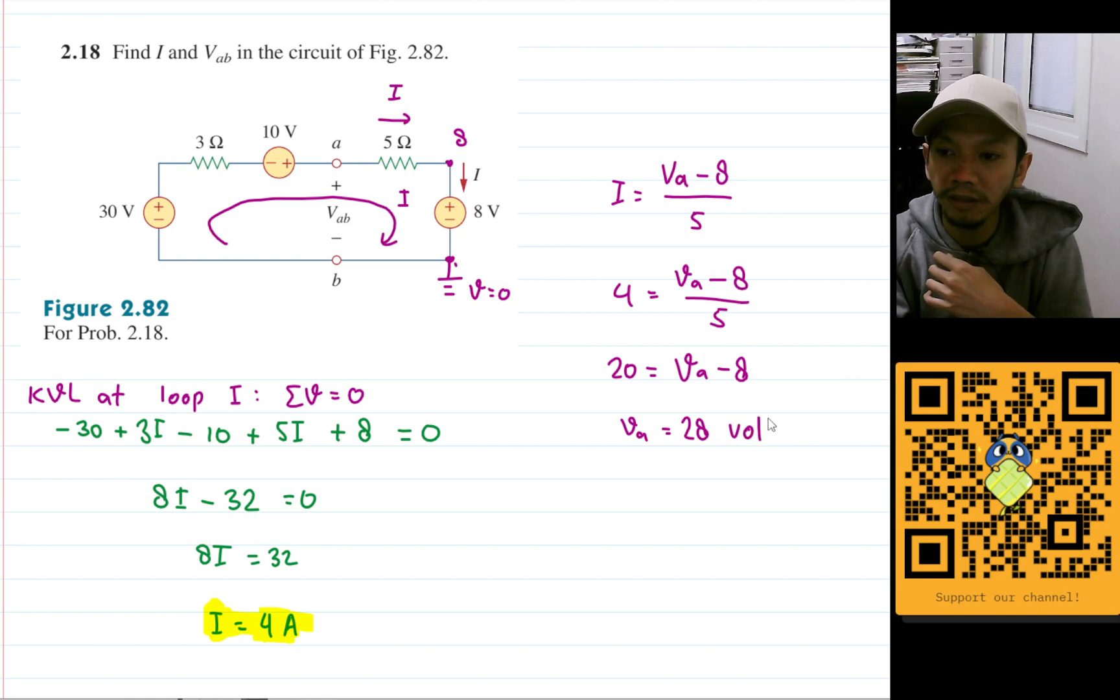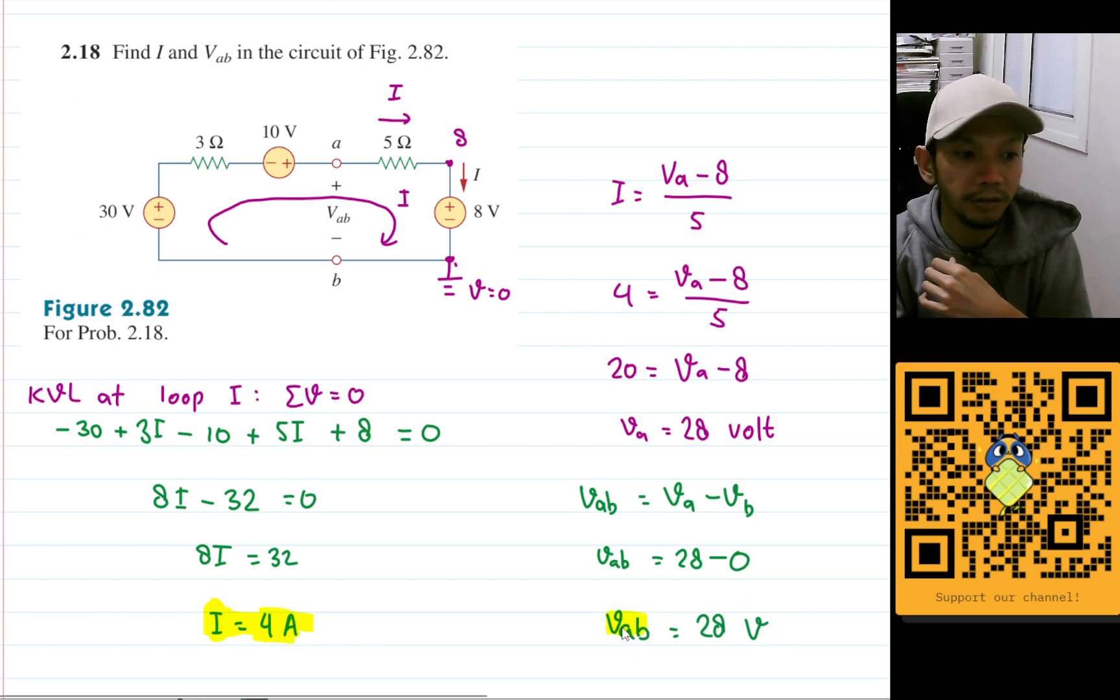But we are not asked about Va, we are asked about Vab. So what is Vab? Vab is just Va minus Vb. So Vab will be Va, which is 28, and Vb, because we choose our Vb as our ground, will be zero. So we'll get Vab here is 28 volts, and this is the final answer of the question.